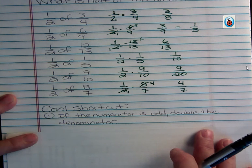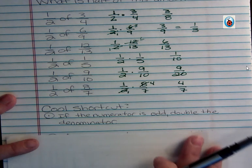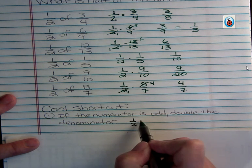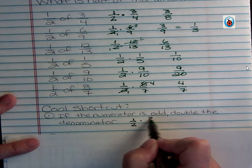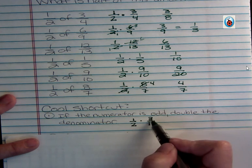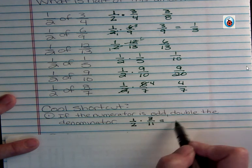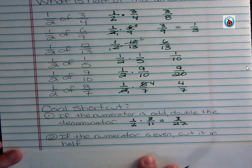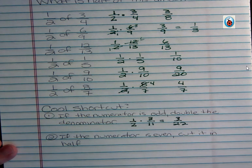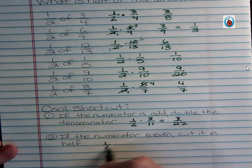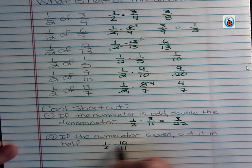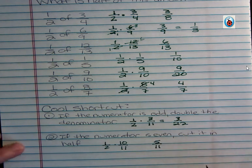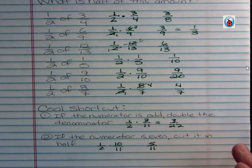If the numerator is odd, double the denominator. So again, if I have one half of three-elevenths, the odd numerator means I'm just going to double that denominator - that would be three-twenty-seconds. If the numerator is even, cut it in half. Those are the ones I like because they're very easy to see. So if I have one half of ten-elevenths, then I can say well I'm just going to cut that ten in half and I'm going to get five-elevenths.